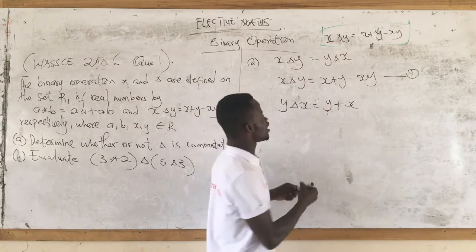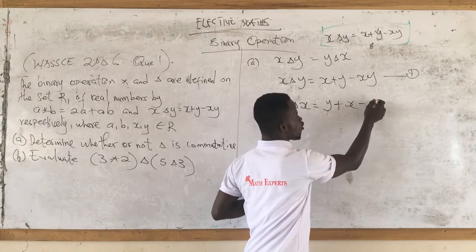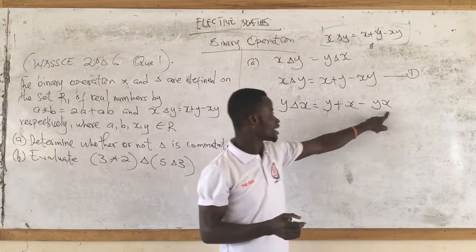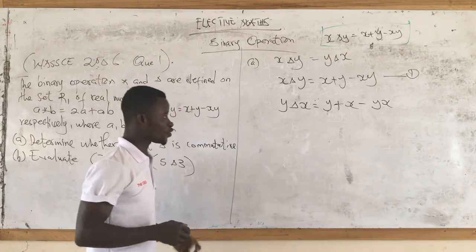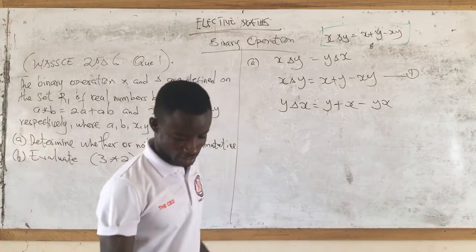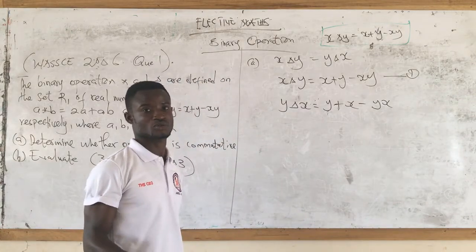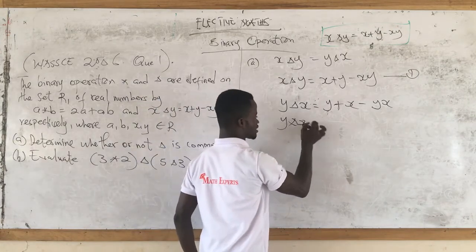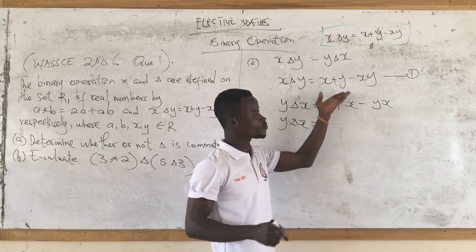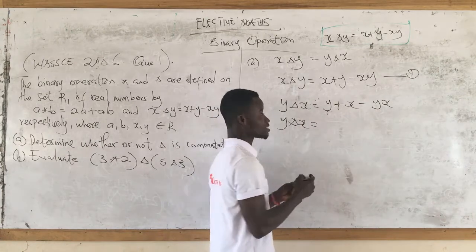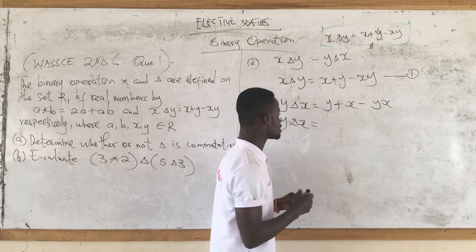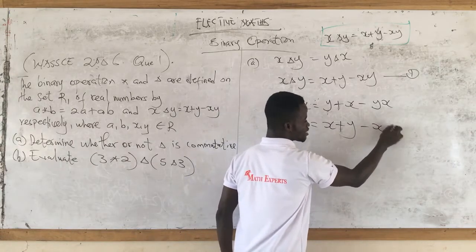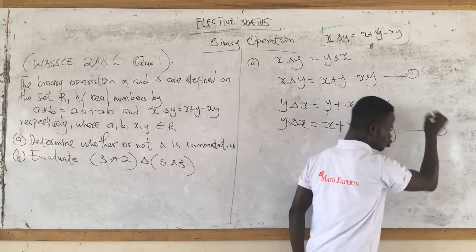So y delta x becomes y plus x minus yx. Now we can rewrite this to align with equation one, because we can see they are equivalent. This gives us y plus x minus xy, which is the same as x plus y minus xy. We call this equation two.